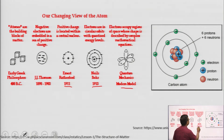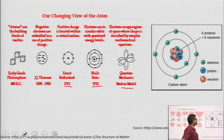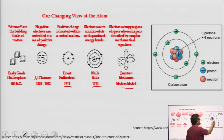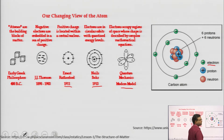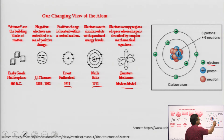He said electrons occupy regions of space whose shape is described by complex mathematical equations. As an example shown here, this is a carbon atom — you can see in the carbon atom there are two orbits and total six electrons. The green negatives are electrons, the positive blues are protons, and the orange ones with neither positive nor negative sign are neutrons. Protons and neutrons are in the nucleus at the center, and six electrons are on the outer orbits.